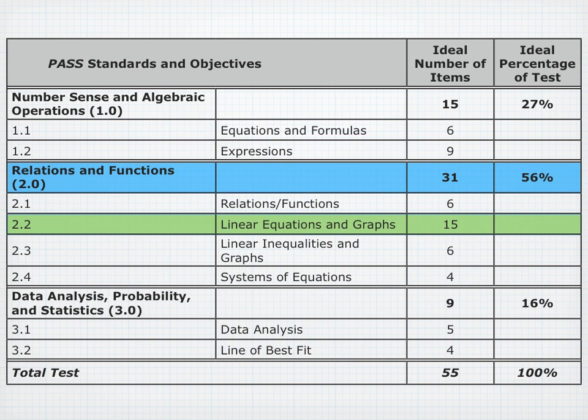When you look at the Ideal Number of Items column, this objective stands out because Linear Equations and Graphs by itself has just as many, if not more, items than the other two standards. This one objective is going to be really important to understand before you take this test. Of the 31 questions for Relations and Functions, 15 of them are over Linear Equations and Graphs — almost a quarter of your test.